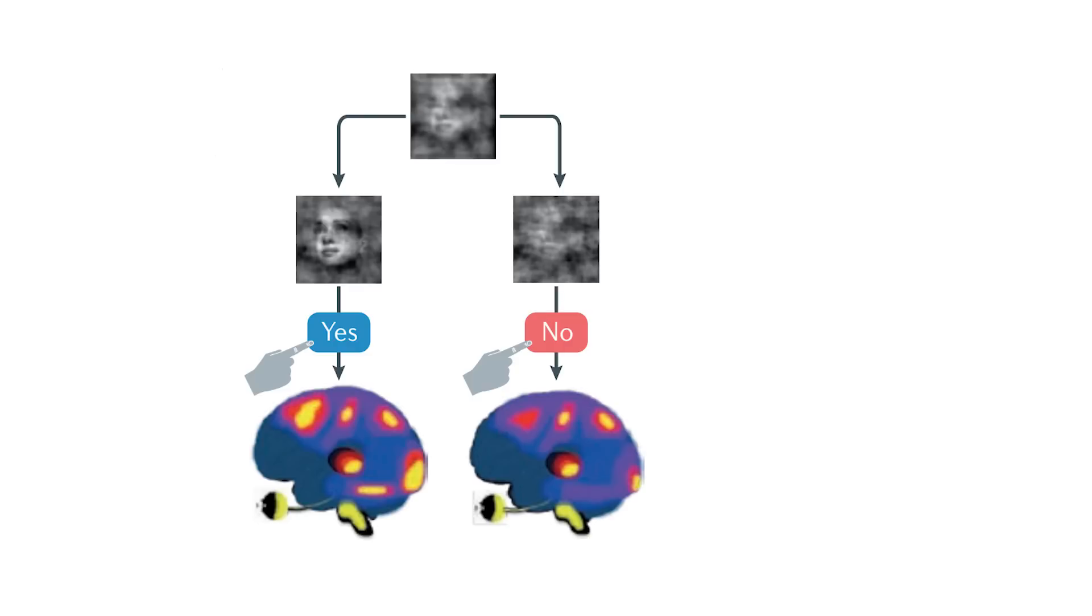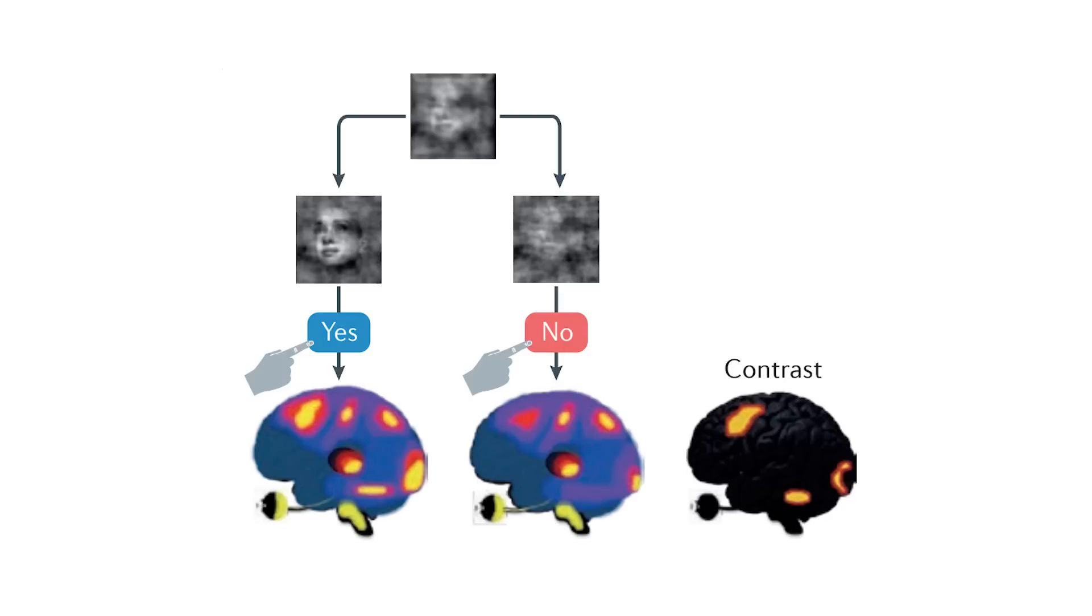For example, in order to figure out which part of the brain is responsible for facial recognition, you can give people this image of a face that's really noisy, so some people see the face and some people don't. Then you ask them whether they see the face, but you also record their brain scans at the same time. And then by taking the difference in the brain scans between the yes responses and the no responses, we find out which part of the brain does facial recognition.